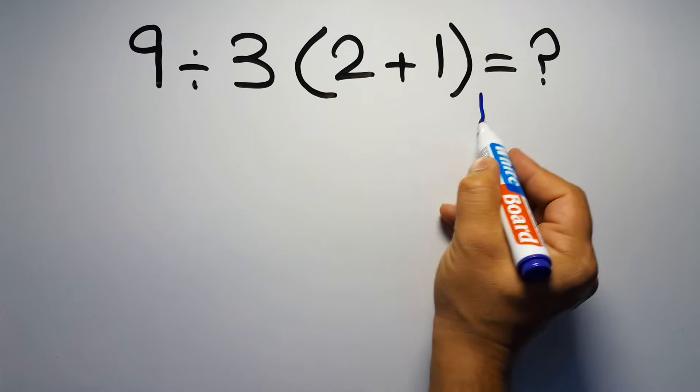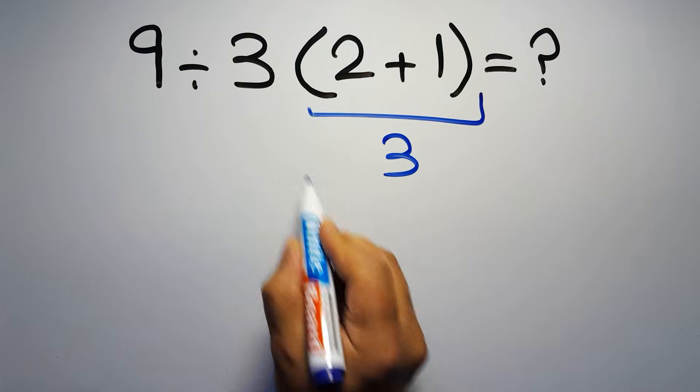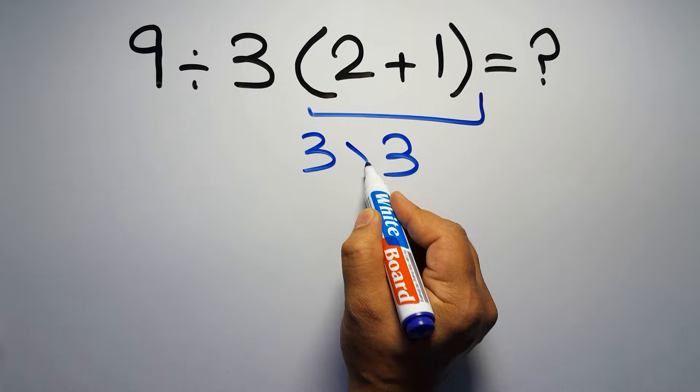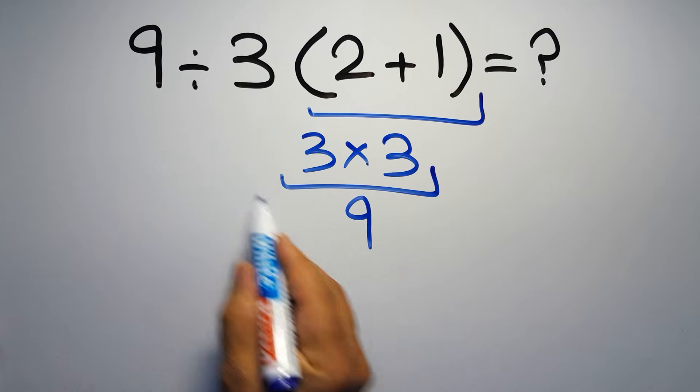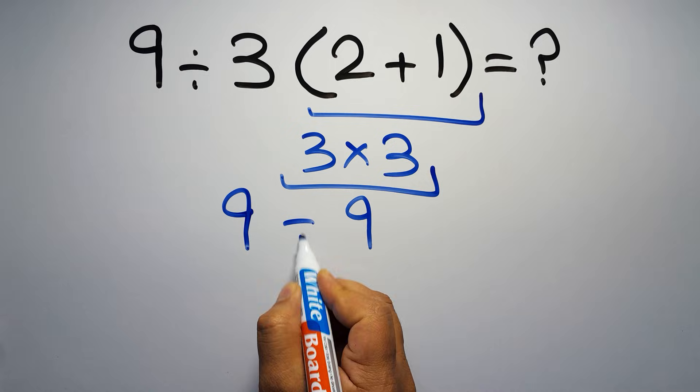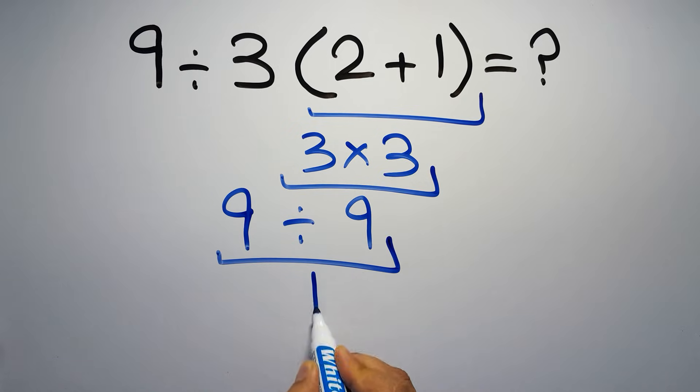2 plus 1 gives us 3, and 3 times 3 equals 9, so 9 divided by 9 gives us 1. But this answer is not correct.